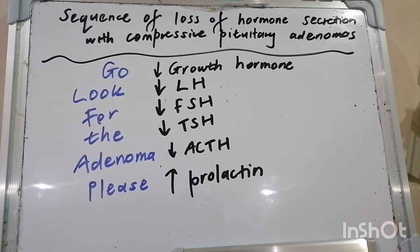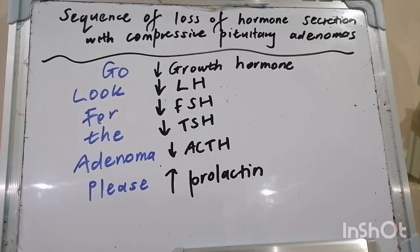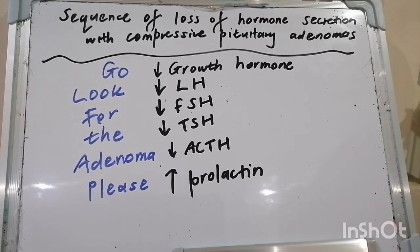In hyperprolactinemia, if prolactin is less than two times the upper limit of normal, repeat it at least two more times — fasting — as most cases normalize. If persistently elevated, look for offending medications (a major differential), and check pituitary function, renal function, liver function, beta-hCG (especially in females), TSH, IGF-1. Always image the pituitary and consider a macroprolactin assay.